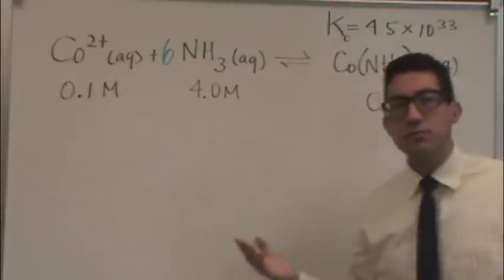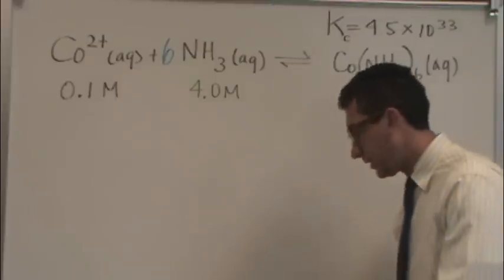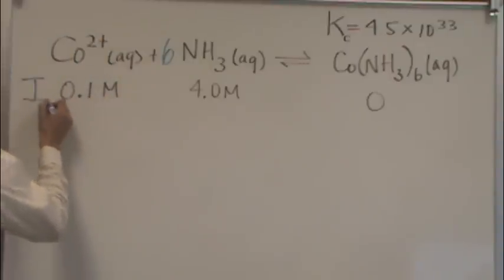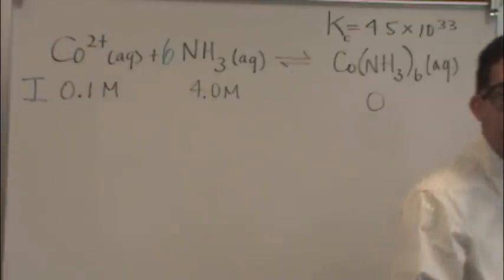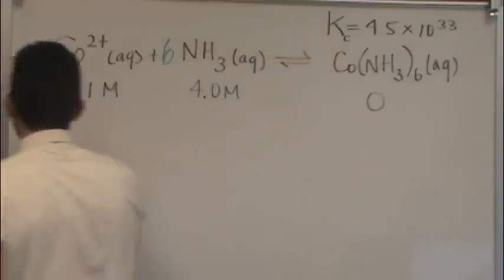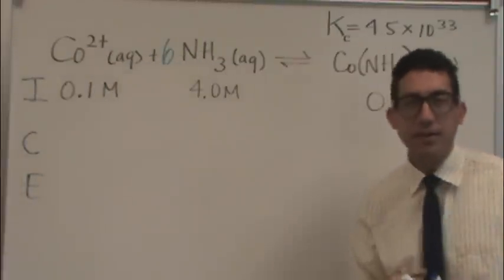And now the question really is, what's equilibrium concentrations? And you might think, okay, well, if I need the equilibrium concentrations, I'll just make this first line my I line. And to get equilibrium concentration, I'm going to do an ICE table. So I, C, and E. And that would make a lot of sense.